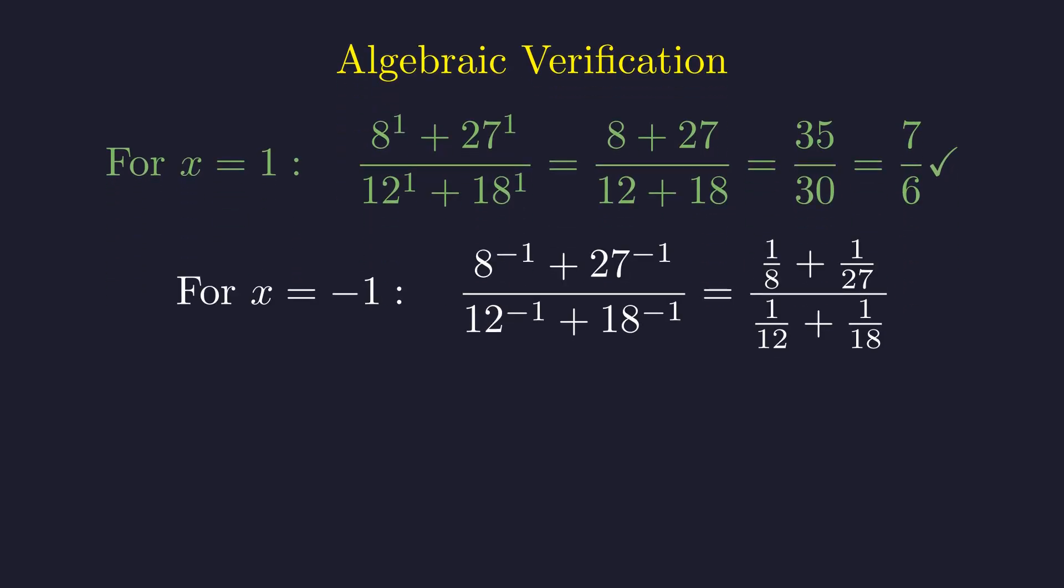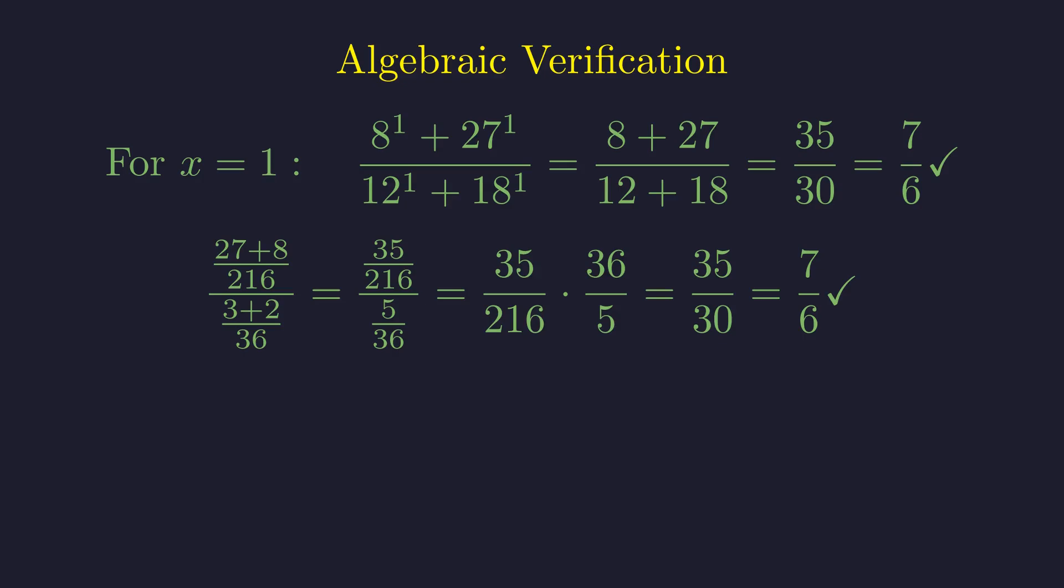For x = -1, we're dealing with reciprocals, so this takes a bit more work. After working through the common denominators and simplifying, we get the exact same result: 35/30, which is 7/6. Both solutions check out beautifully.